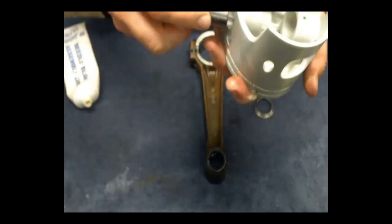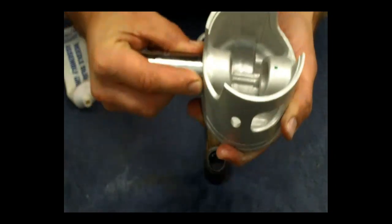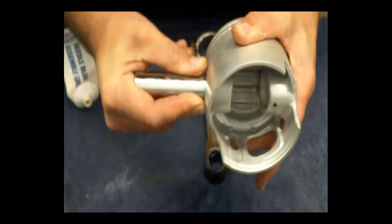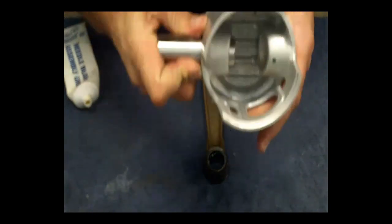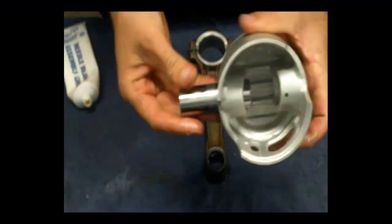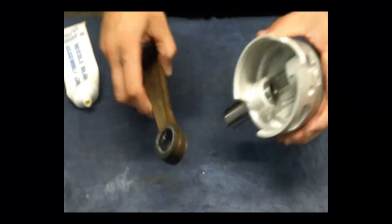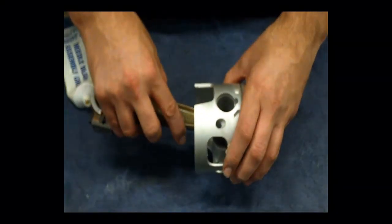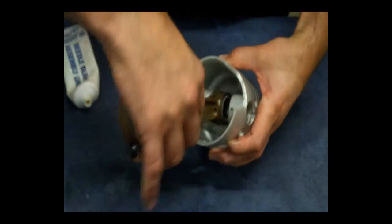So I install the wrist pin from the bottom of the piston. Make sure that it's free in the piston, that it can slide in and out and not be restricted. Have it protruding just a little bit. And look down from the top through the hole and line it up into the conrod and slide it down gently.